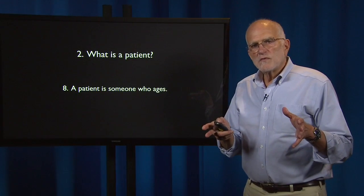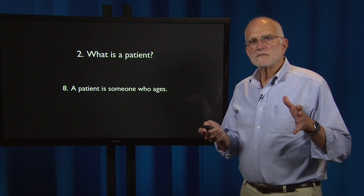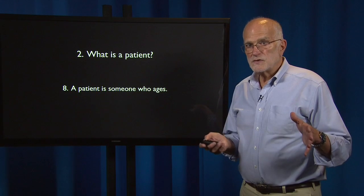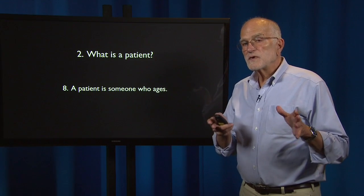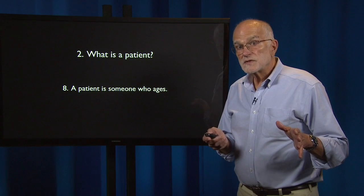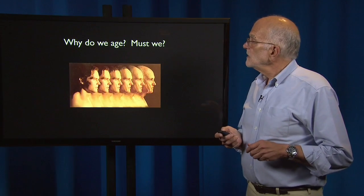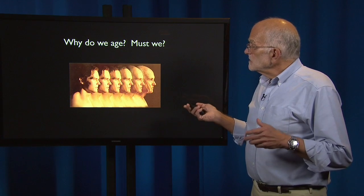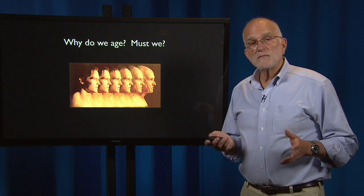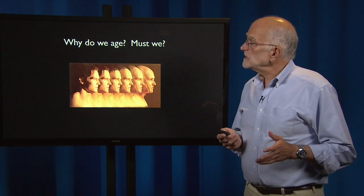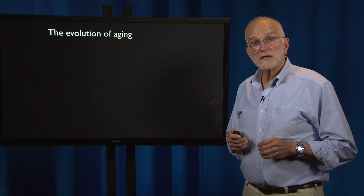One of the most important ways to look at patients is as organisms that age. All organisms that reproduce asymmetrically must age, and we certainly do. Why do we age? Must we age? These are both very important questions, and the evolutionary theory of aging has given us good answers to them.